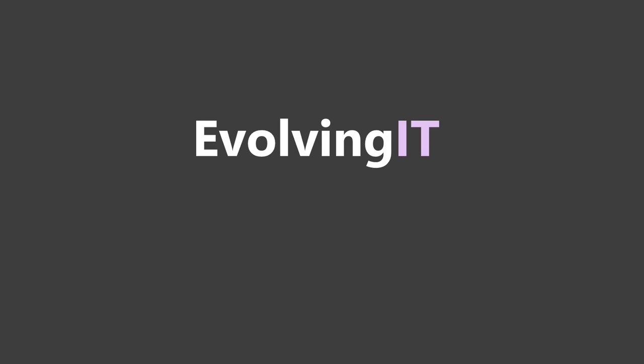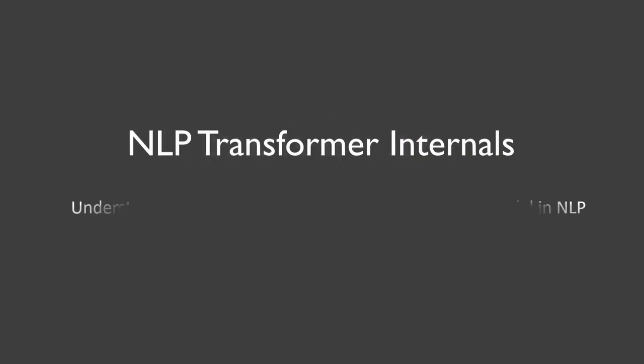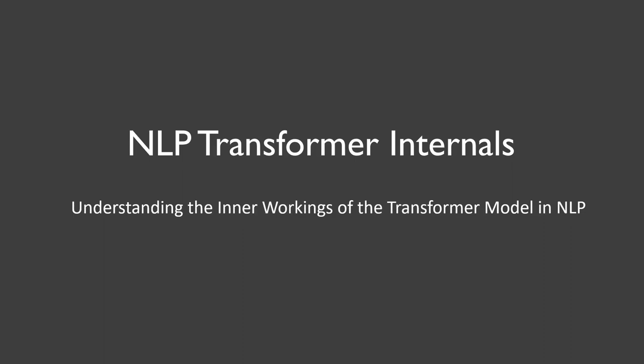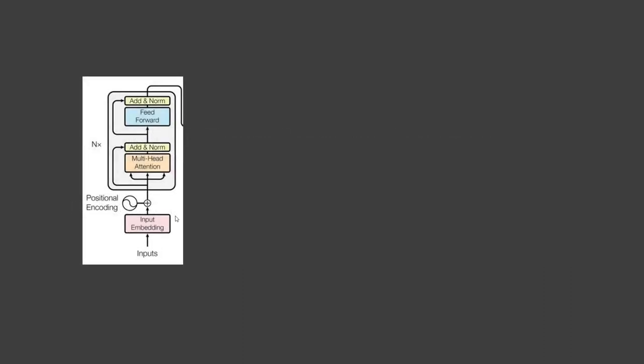Hello friends, welcome back to this tutorial series on transformer architecture. We move on to the encoder part of the transformer. The multi-head attention layer is the first encoder element in the transformer architecture. It allows the model to weigh the importance of different words or positions in the input sequence when generating the output. It captures dependencies and relationships between words by assigning different weights or attention scores to each word, indicating its relevance in the context.